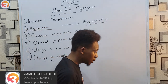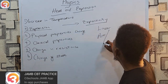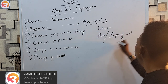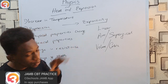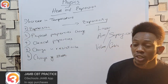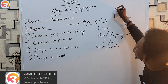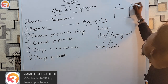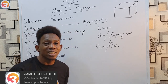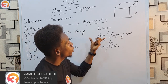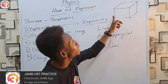Expansivity occurs in three different ways: we have linear expansivity, area expansivity (also called superficial expansivity), and volume expansivity (also called cubic expansivity). In linear expansivity we study expansion in only one dimension — length. In area expansivity we look at two dimensions — area. In volume expansivity we study all three dimensions — volume.